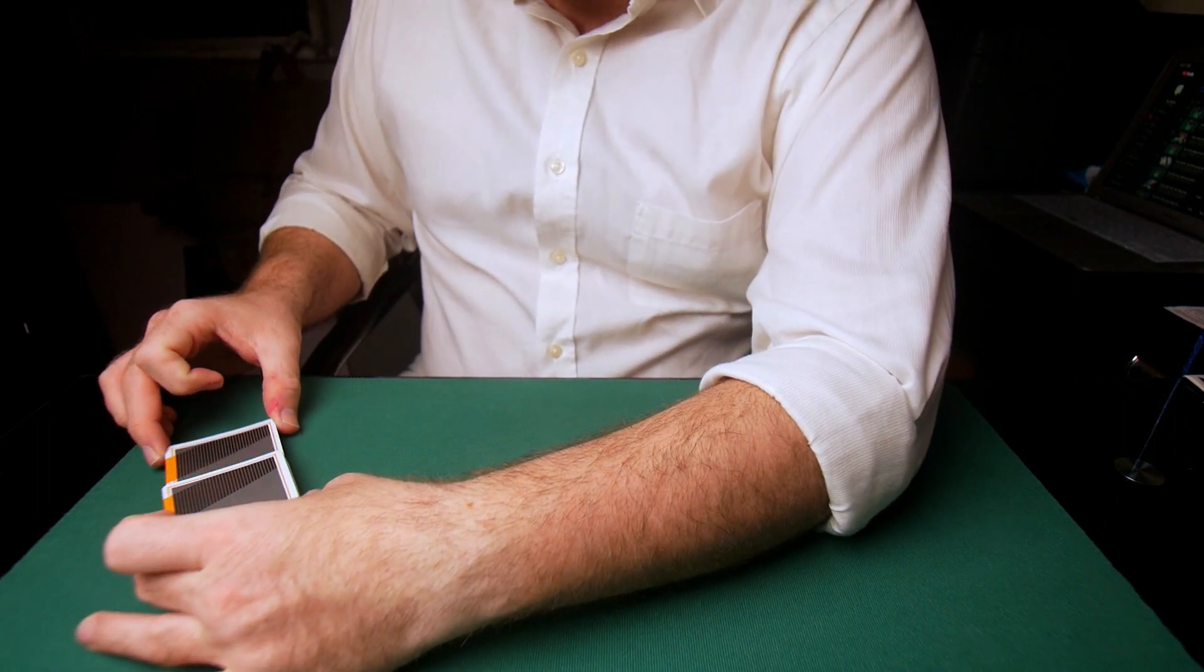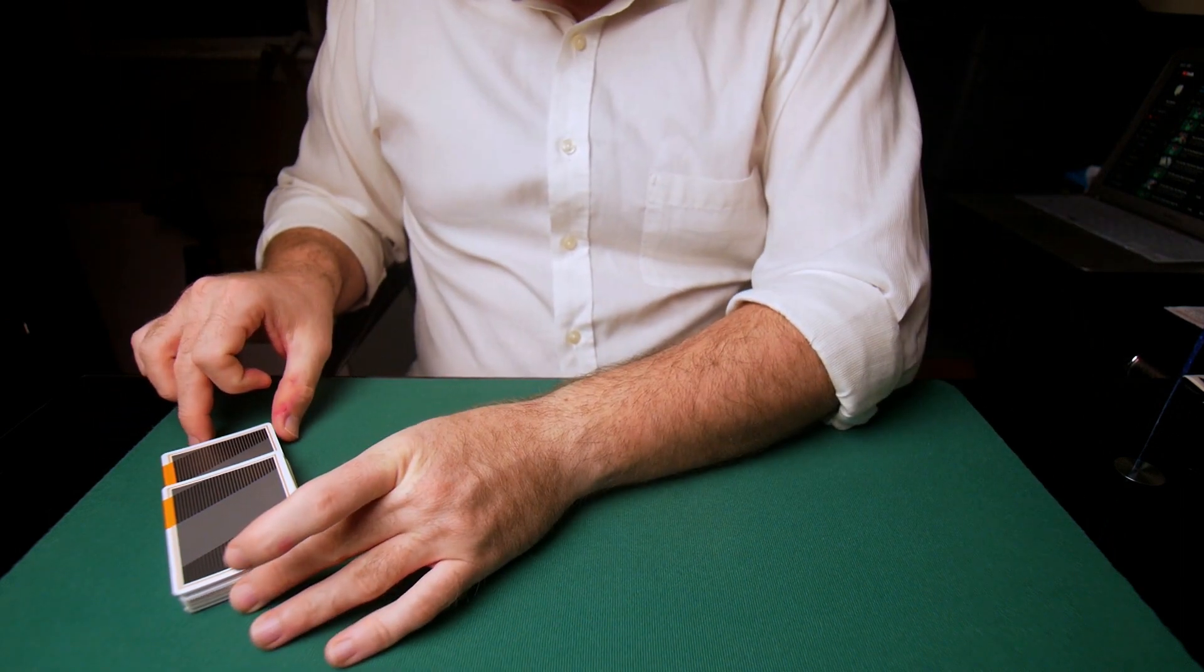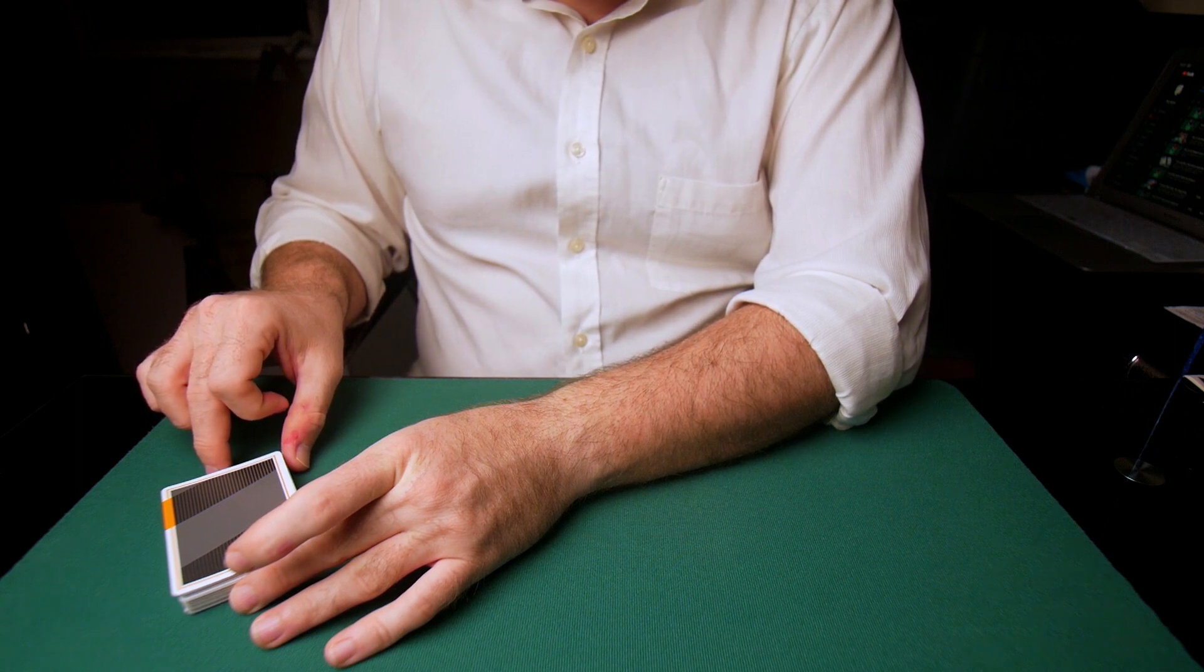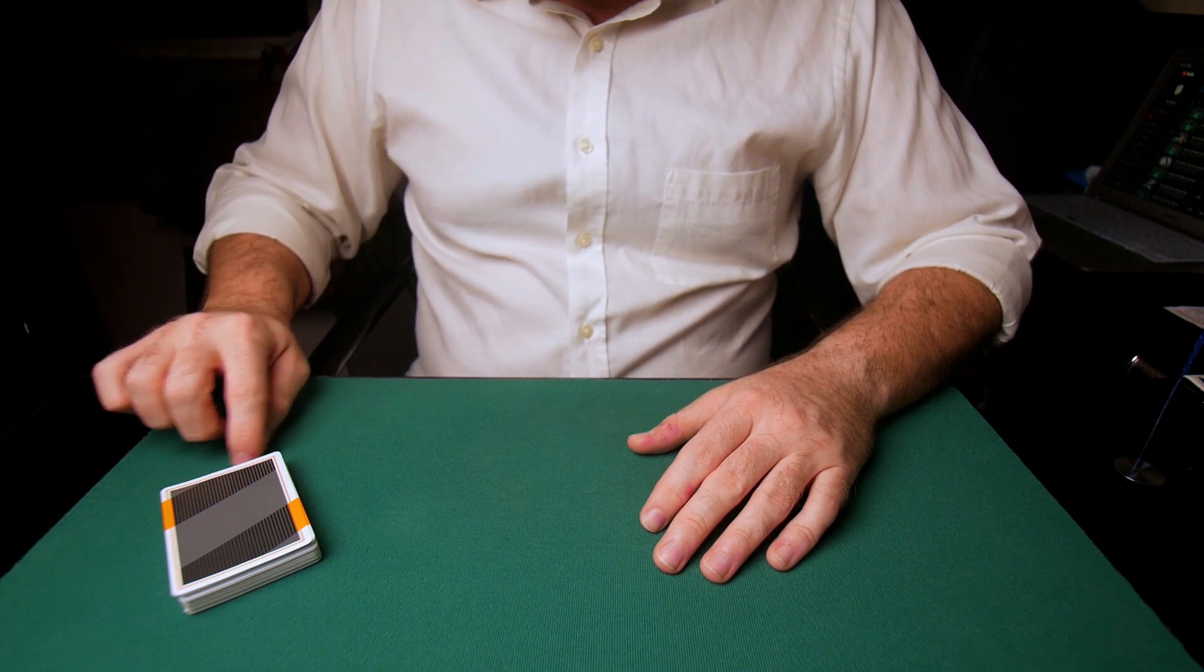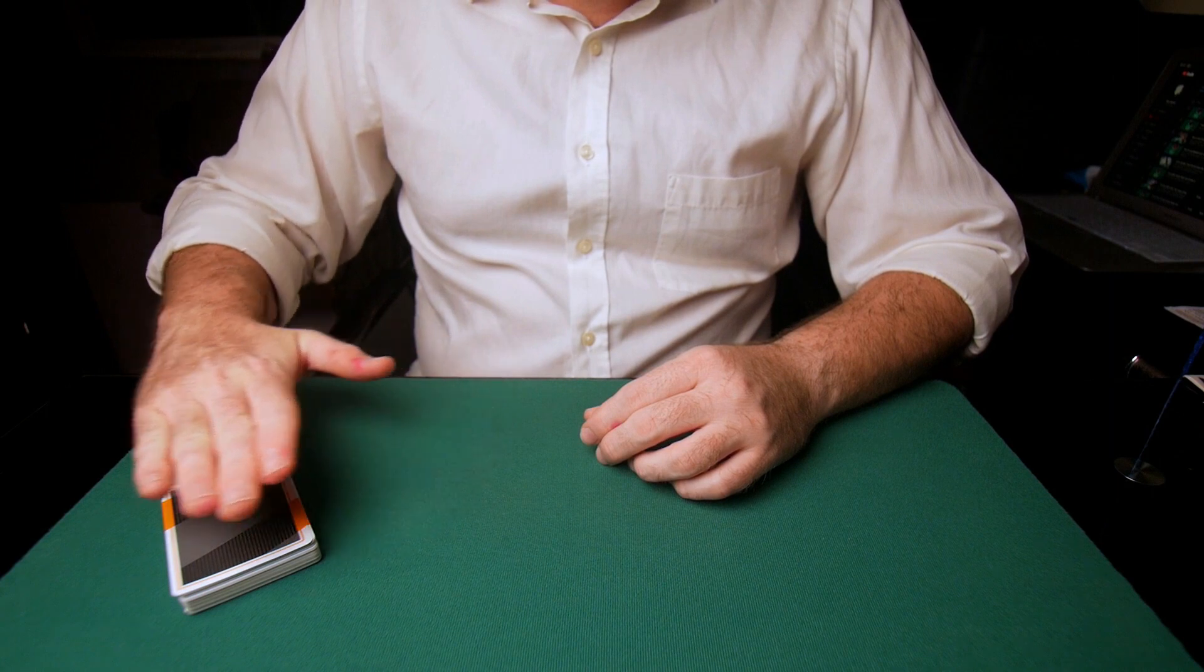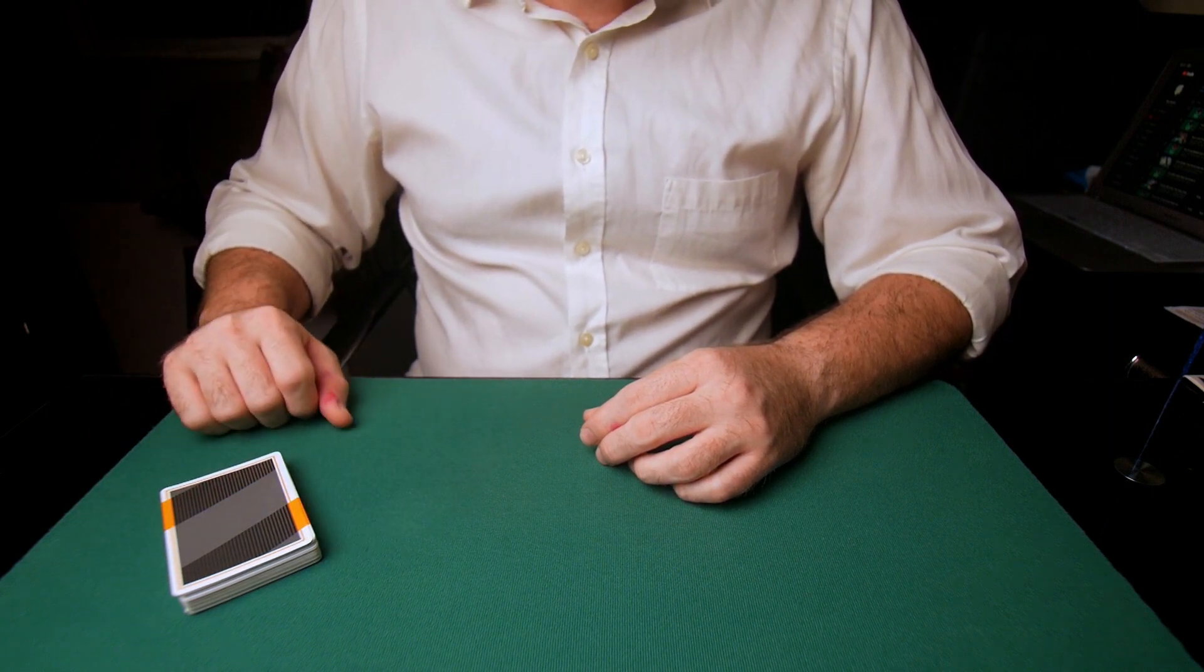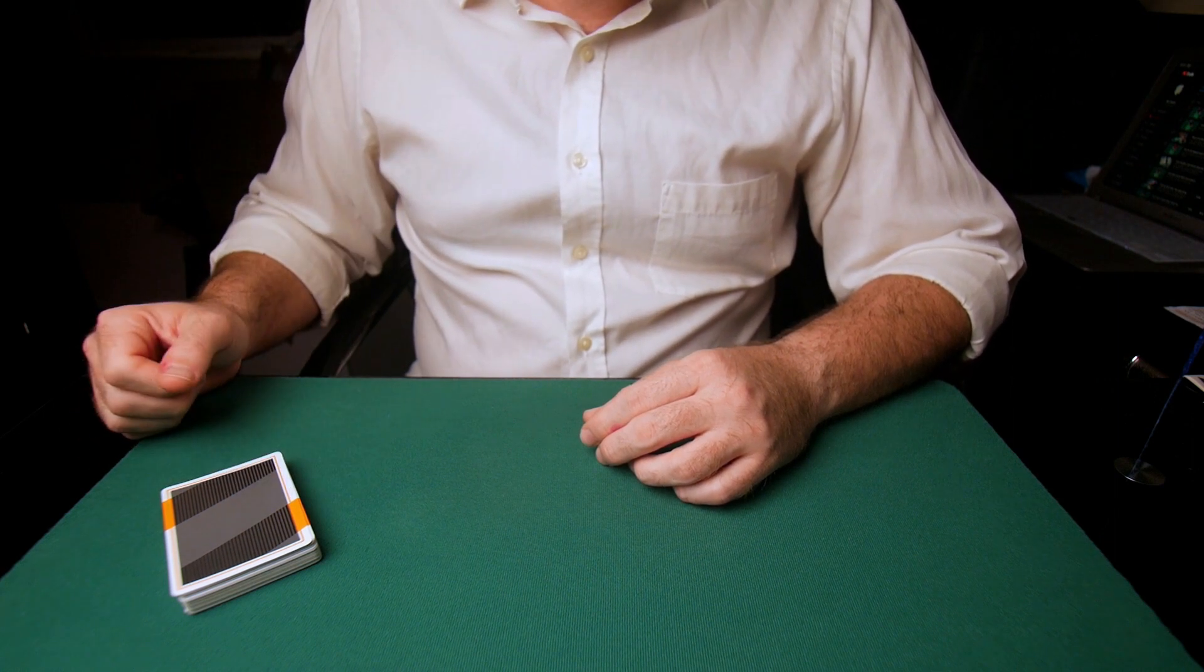So you cannot make that jog card this far back. So it cannot be that long. You need to practice to put that jog very small, very tiny in there. So that way, the top portion of the deck will cover the card that's being jogged out. But if you jog the card out too much, then the deck won't be able to cover that.